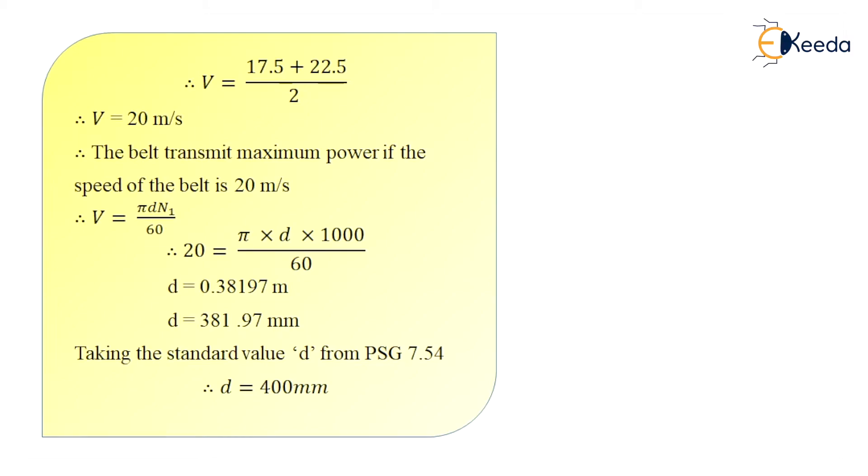I know the value of velocity as π D into N1 upon 60. So after substituting the value of V as 20, I get the value of D as 0.38197 meter, that is diameter as 381.97 mm. Taking the standard value of small d from the PSG data book, I select D is equal to 400 mm.